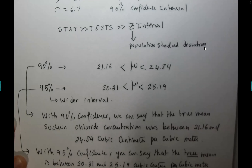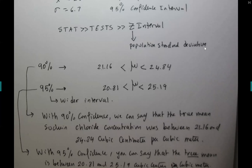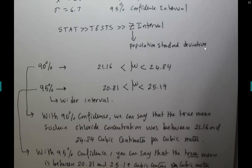In section 6.2, the population standard deviation is not given. Instead, we're given the sample standard deviation S, which is actually the more common real-life case. Because you learned section 6.1, you'll see how straightforward 6.2 is — we keep using the calculator but with different formulas.